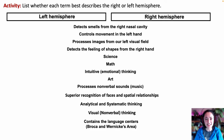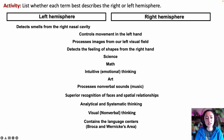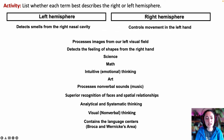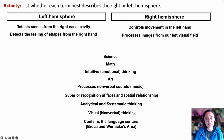Now let's test your understanding of the differences between the left and right hemisphere. It detects smells from the right nasal cavity — that would be the left hemisphere. Controls movement in the left hand — that would be the right hemisphere. Processes images from our left visual field — that would be the right hemisphere. Detects the feeling of shapes from the right hand — that would be the left side. Which side is considered the science center? That would be the left side. Math — also the left.